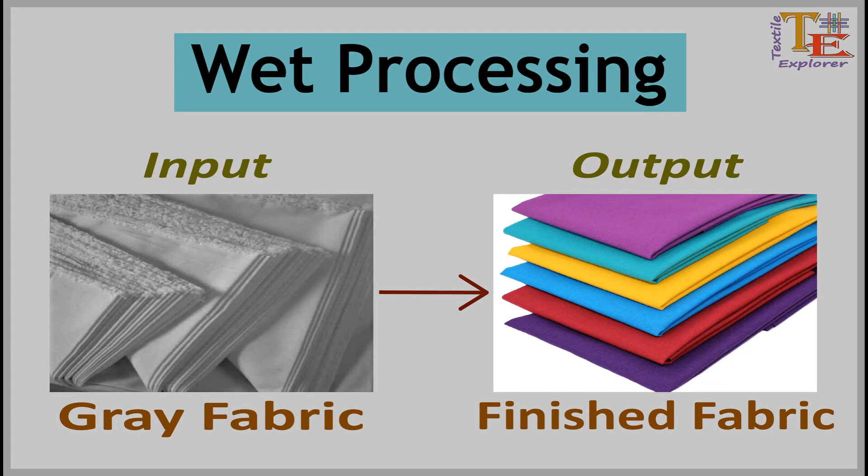By wet processing we get the finished fabric. Pre-treatment, dyeing, printing, and finishing are included in this process. We get colored, printed fabric as the output.